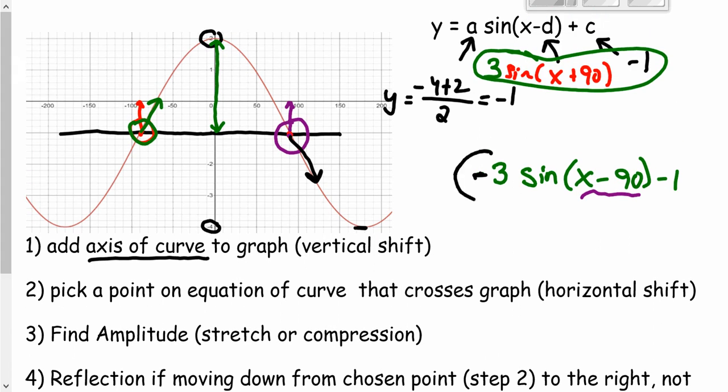So I can enter this into desmos and it will create the exact same graph as my first equation. So all equations have more than one version, depending on which point you pick along your graph that crosses the axis of curve that we created in the first step.